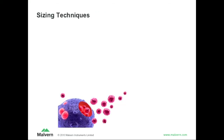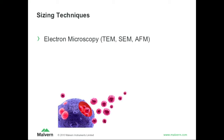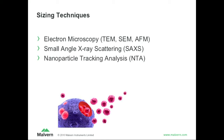So how can you size things? There are a few techniques that many of you are familiar with. I bunched AFM, SEM, and transmission electron microscopy together here — they're kind of microscopy-based, number-based techniques where you take an image and count how many particles you have of the different sizes. Then you can do small angle X-ray scattering, using the low wavelength to probe dimensions on the nanoscale. And then there's nanoparticle tracking analysis, which has been around for maybe the last 10 years. And then the one I like best, coming from Malvern, is dynamic light scattering.